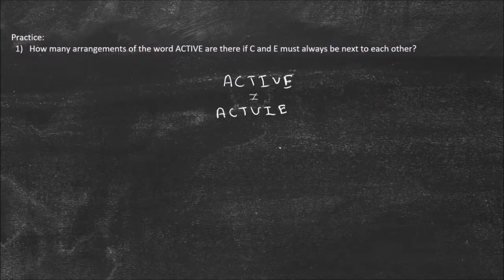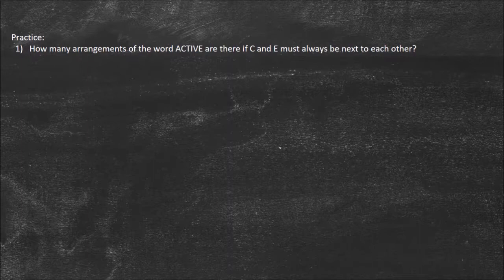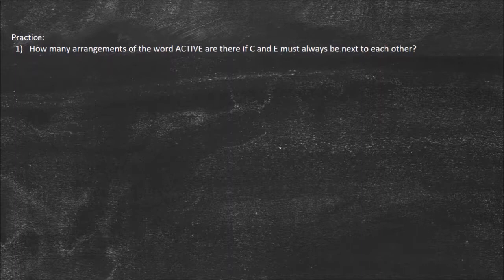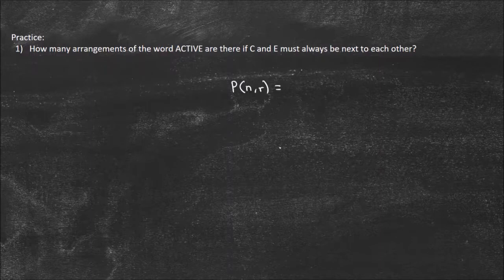Now the question is, can I do repetition or not? In this case, I can't do repetition because that would be like AAAA. But if we're using the letters in the word ACTIVE, we can only use each letter one time. So repetition is not allowed. That means I'm going to the second formula, which says P(n,r) equals n factorial divided by n minus r factorial.